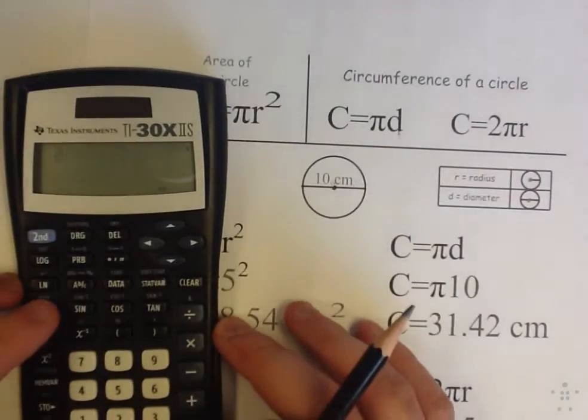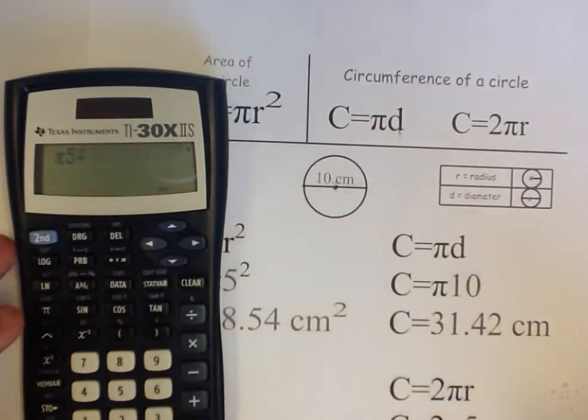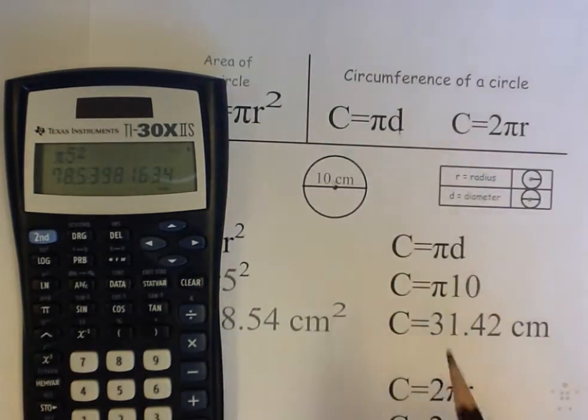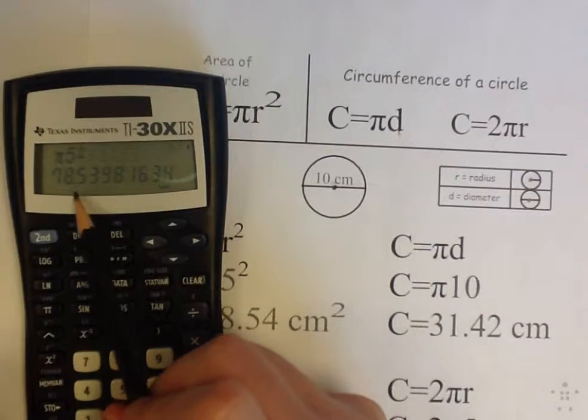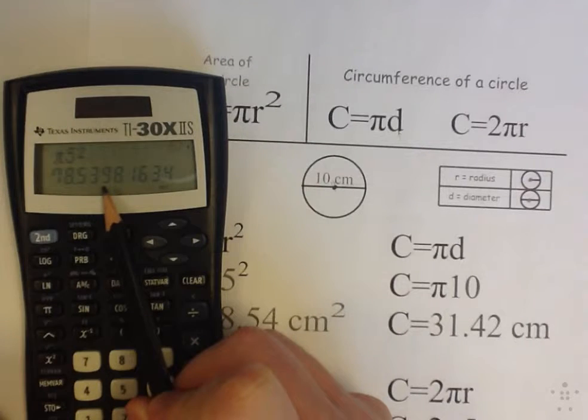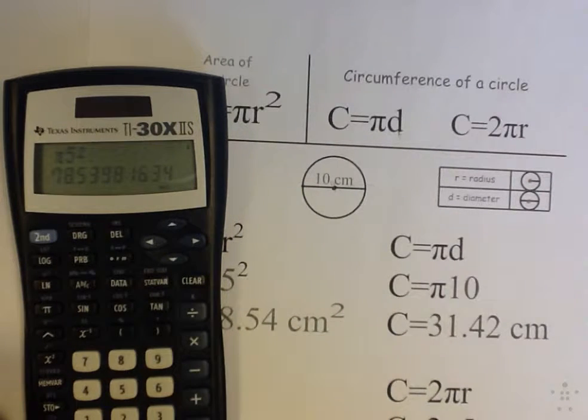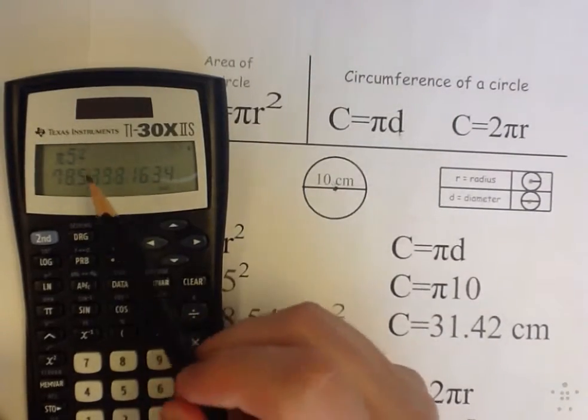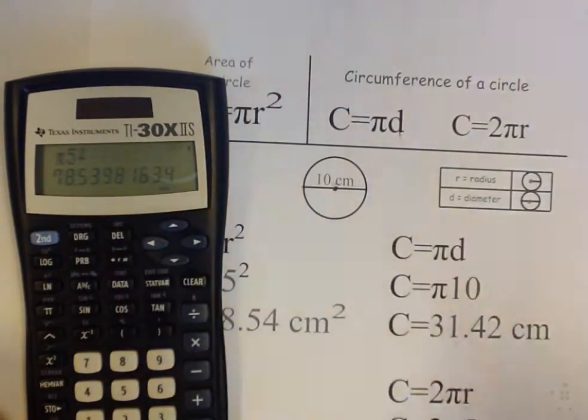So I hit my pi button. I hit 5, and I hit squared. Pi 5 squared equals. You get this big long number. I round to two decimal places. 78.53, and I look at that 3. I look at the next number, 9. Does that tell me to round up or down? The 9 tells me to round the 3 up to a 4. So my answer is 78.54.